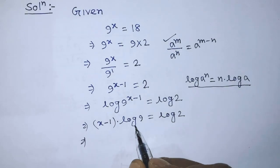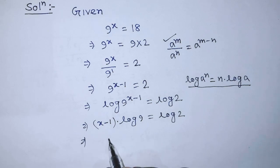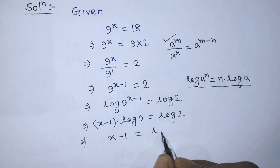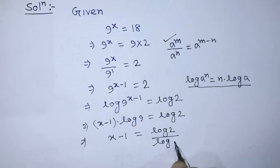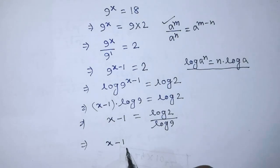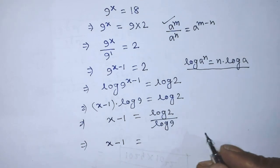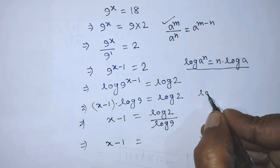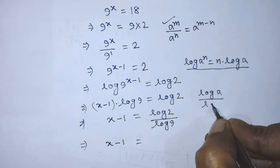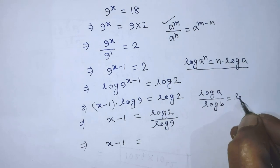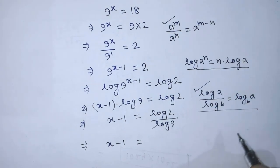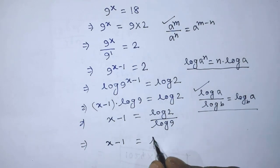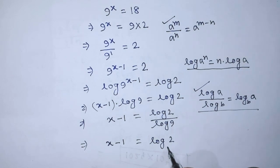We have to transpose log of 9 from left hand side to right hand side. So now we can write x minus 1 is equal to log of 2 over log of 9. To simplify the right hand side, we apply the formula log of a over log of b is equal to log of a to the base b. According to this formula, we can write log of 2 to the base 9.